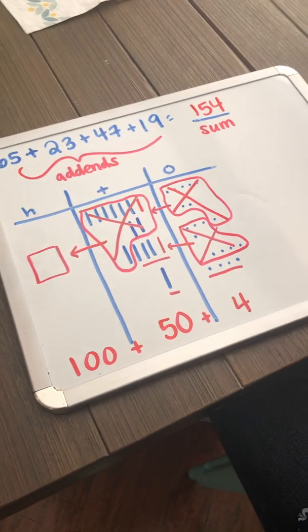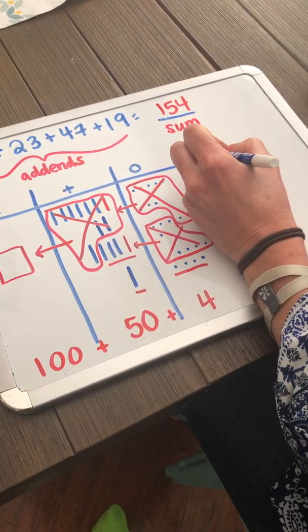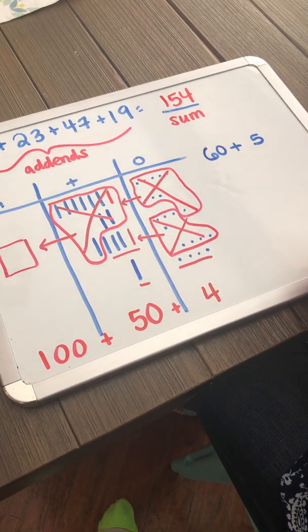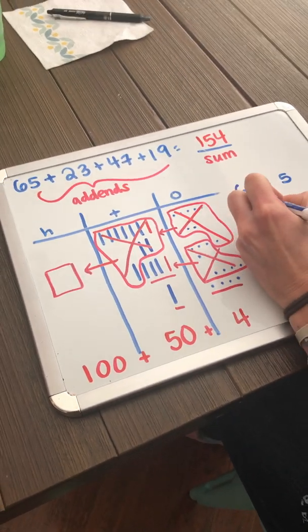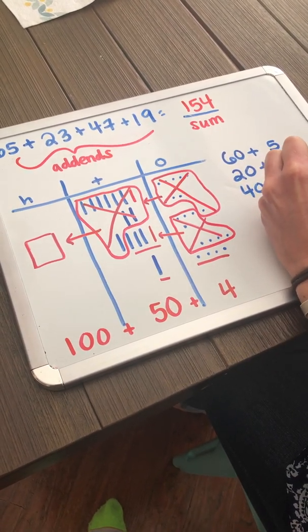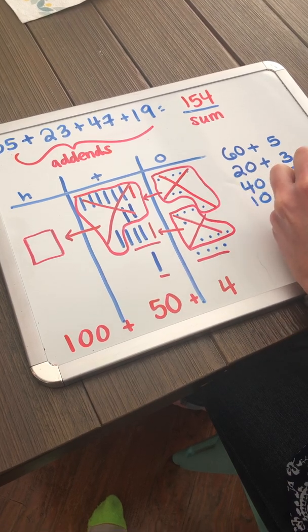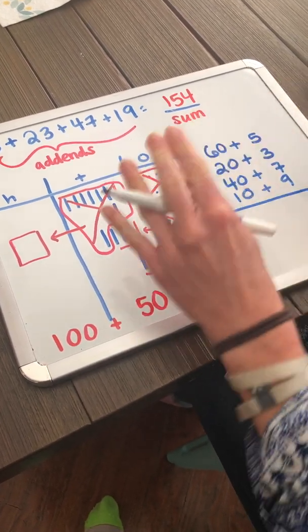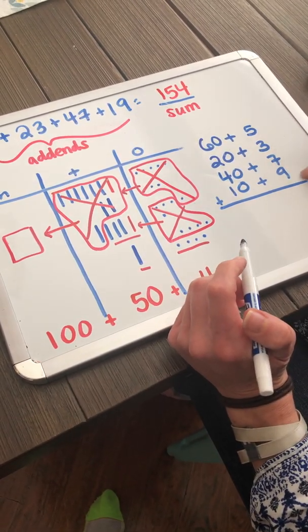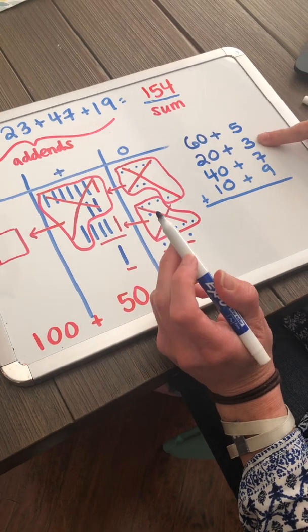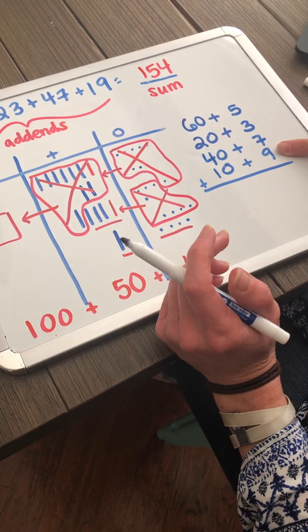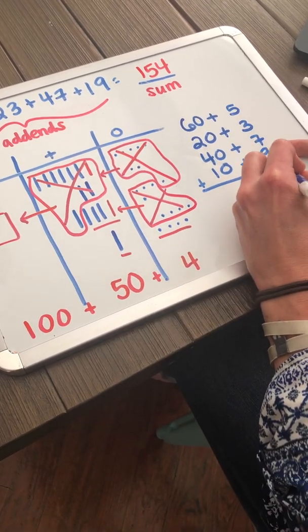So, let's look at this with expanded form. Expanded form is a little bit harder. So, we'll start with 60 plus 5, 20 plus 3, 40 plus 7, and 10 plus 9. We've got to decompose each of those numbers just like we did when we drew them. I need to start grouping together my ones. So, 5 plus 3 is 8. 8 plus 7 is 15. And 15 plus 9 is 24 ones.